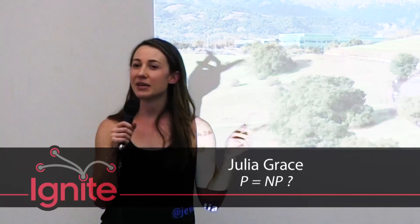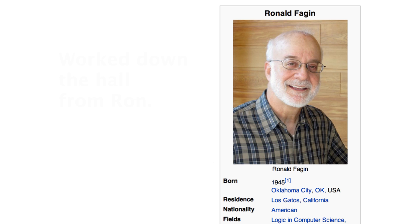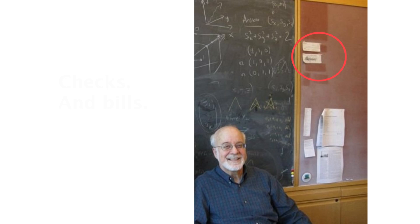I was a researcher at IBM Almaden Research Center. I wrote a lot of papers that included really complex mathematical proofs. But I worked down the hall from Ron Fagan, who's one of the most famous computer theorists in the entire world. I'd go to Ron's office, we'd walk through my proofs, and we'd also talk about the 49ers.